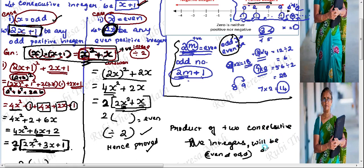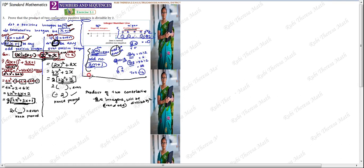So this proof is straightforward. You can see that by splitting into 2 cases — even and odd — and using the positive integer assumption, it is easy to understand. The product of two consecutive positive integers is always an even number, represented as 2m, so it is divisible by 2. Thank you.